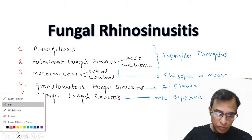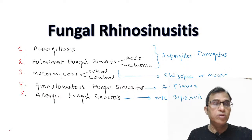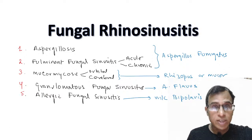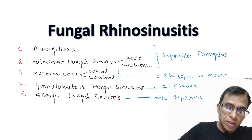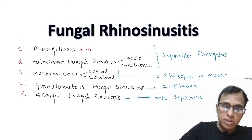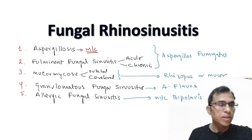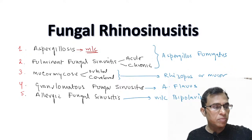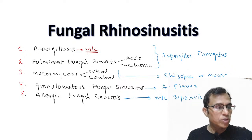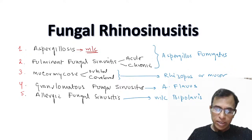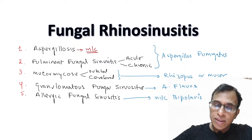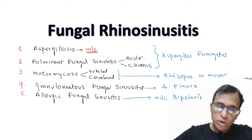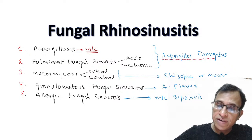Now, if you ask which is the most common of the five fungal diseases of the nose and sinuses, the answer is aspergillosis. Both aspergillosis and fulminant fungal sinusitis are caused by Aspergillus fumigatus, the same fungus, and affect the same area — the nose and sinuses.